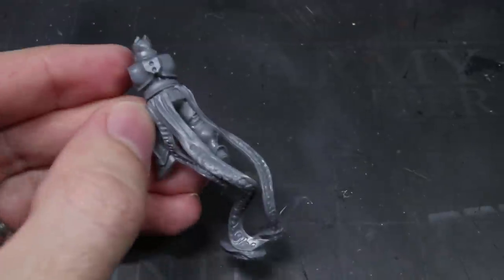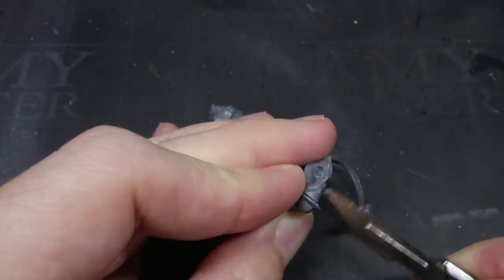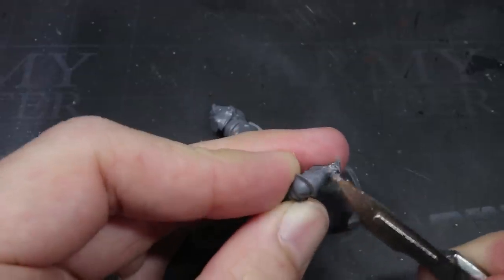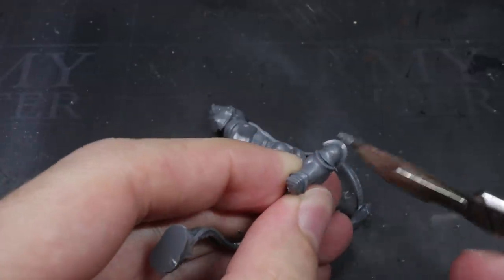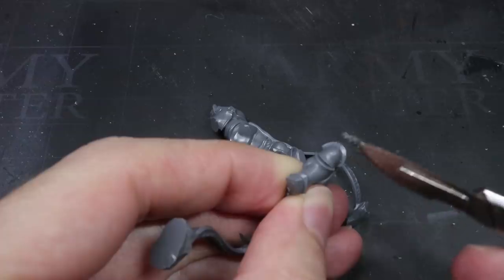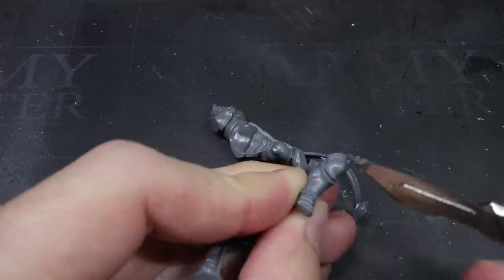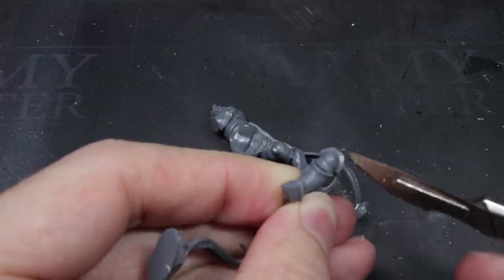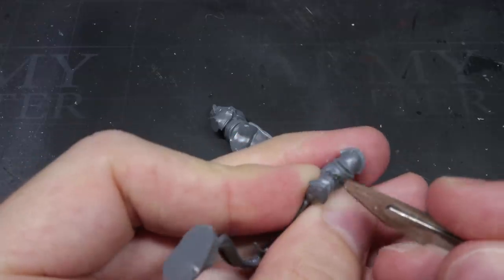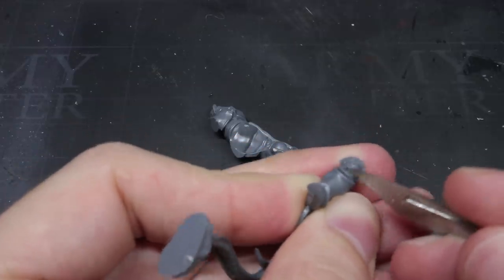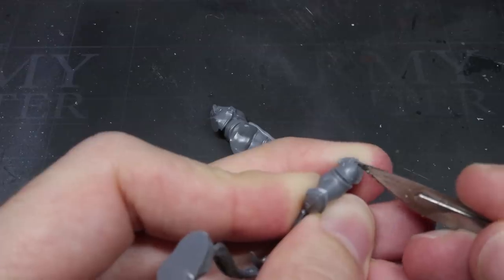I used one of the easy build miniatures, particularly the Prosecutor Prime. These particular models did require a little more work to get ready but they are a little cheaper to get a hold of. Once I'd removed the legs and torso piece from the sprue, I then cleaned up the components, removing any mold lines or tabs with my knife.